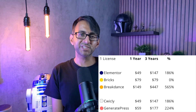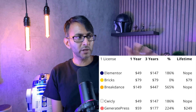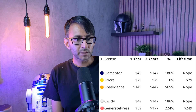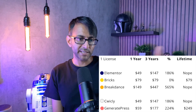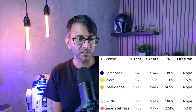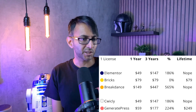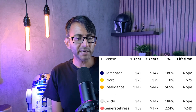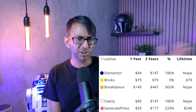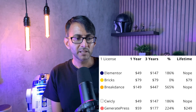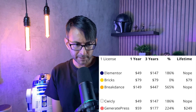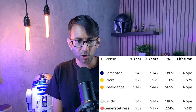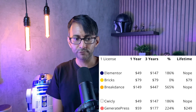But what about a lifetime deal? Elementor don't have a lifetime deal. Bricks, well, it is $79 over the year — it is lifetime. Breakdance don't even have a lifetime deal at the moment. Quickly don't, and GeneratePress do. So if you look at Breakdance: $447 you are going to pay over three years.